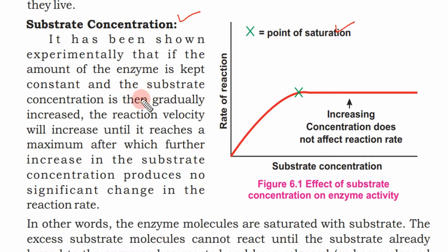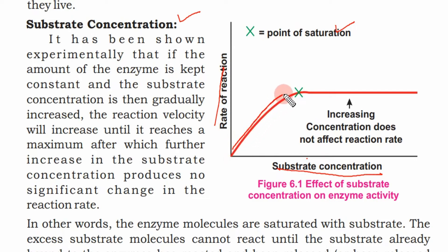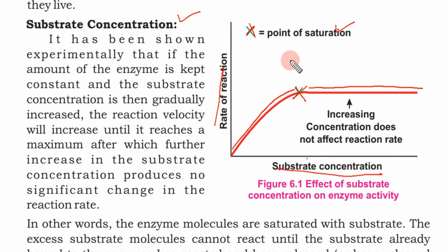The reaction velocity increases until it reaches its maximum capacity. Velocity here refers to speed (riftar). With further increase in substrate concentration, there is no increase in the enzyme's activity rate. As you can see in the figure, the x-axis shows substrate concentration and the y-axis shows rate of reaction. The velocity was increasing, but after the point X, increasing concentration does not affect the reaction rate — the line becomes flat.